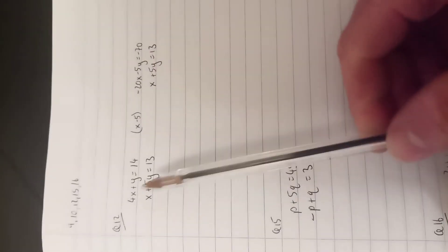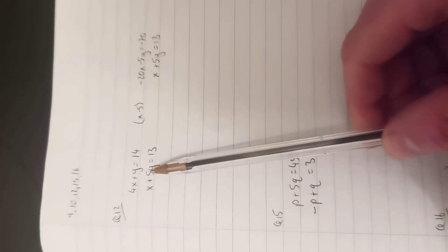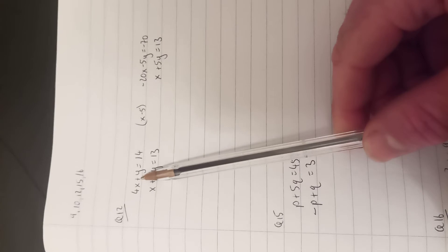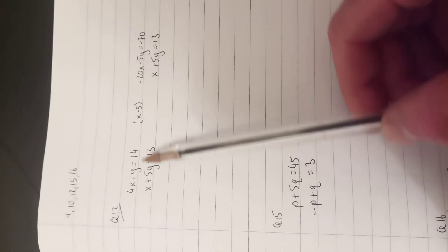I'm deciding to get rid of the y, so I need the same number in front of the y but with opposite signs. So there's a 5 there, there's a 1 there. If I multiply the top line by minus 5, I'll have the same number but the opposite sign.